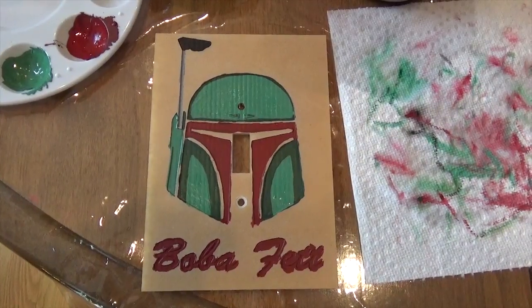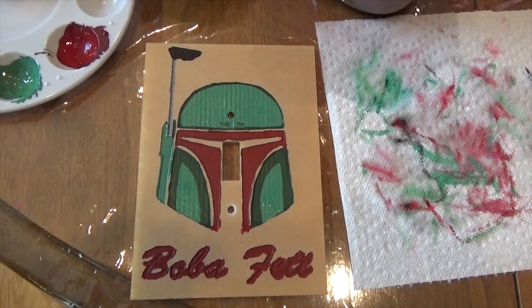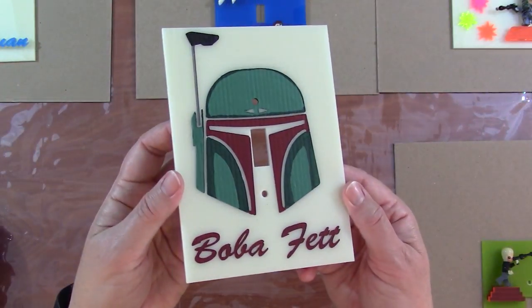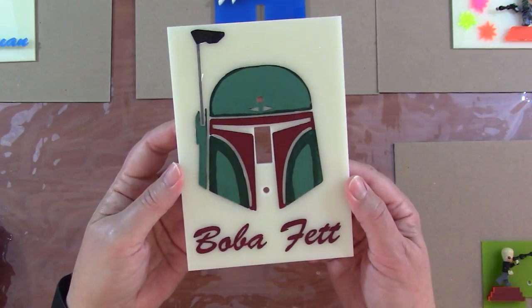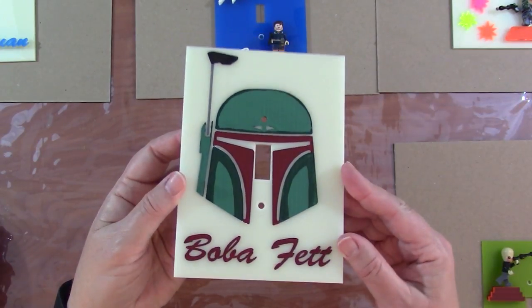I painted my Boba Fett plate using the Citadel paints that I use for painting my miniatures. And I'm careful but I'm not super neat because I know I'm gonna be peeling the paper off and this is what it looks like when the paper's off. It turns out quite well and I'll just seal that with matte varnish.